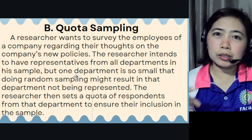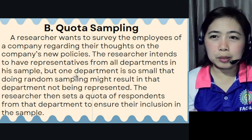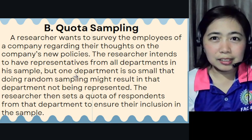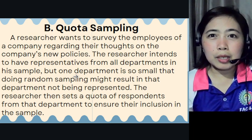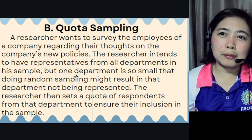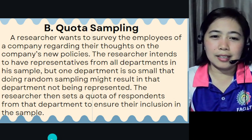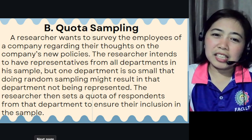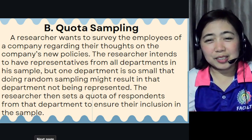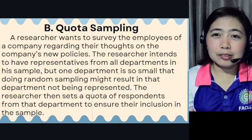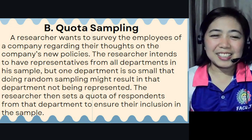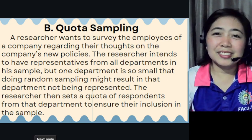The researcher then sets a quota of respondents from that small department to ensure their inclusion in the sample. This applies in school situations too — for example, in reading of forms, the HUMSS strand may have the most students, giving them a greater chance of representation, while TVL, being smaller, has lesser chances. A quota ensures the smaller group is still included.